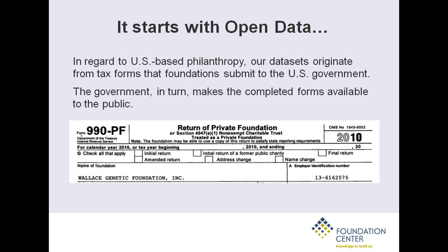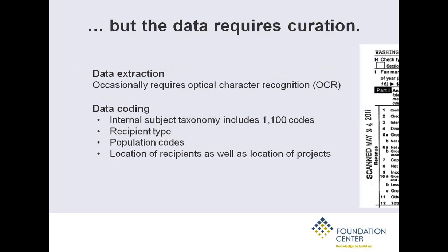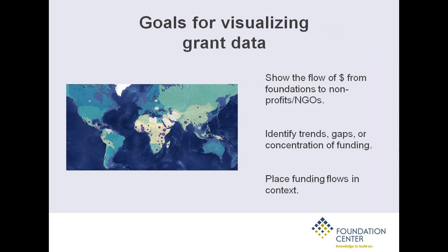The majority of our data about foundations and grant-making comes from the 990-PF form. Foundations have to file it every year, describing the grants they give to nonprofits in the U.S. or abroad. We start with that and then curate the data — sometimes scanning it, sometimes using OCR to make it machine-readable. We have about 40 people here who clean and code the grants using a taxonomy with 1,100 codes, coding by recipient type and population as well. Once we have clean, thorough data, we can do some interesting things with it.